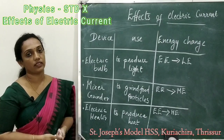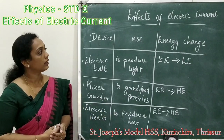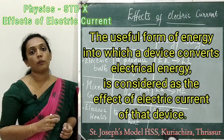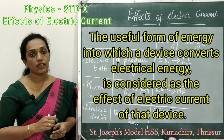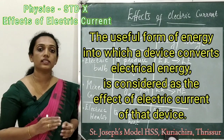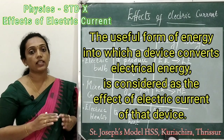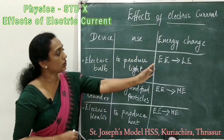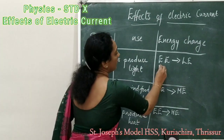Now we are concluding our topic: Effects of Electric Current. The useful form of energy into which a device converts electrical energy is considered as the effect of electric current of that device. In the case of the electric bulb, the electrical energy is converted into light energy, so we call this the lighting effect.